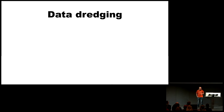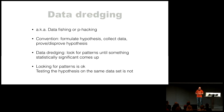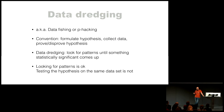Related to p-values, we have a practice called data dredging — also called p-hacking or data phishing. Essentially, we are looking for significance before testing, before having any hypothesis. The convention should be: formulate a hypothesis, collect data, and prove or disprove it. Often people try to brute force the data they have, look for something statistically significant, and come up with a hypothesis in retrospect. If you're doing exploratory analysis, that's fine — but back-testing your hypothesis on the same data set is not, because you are going to confirm what you already saw. That's kind of like cheating.